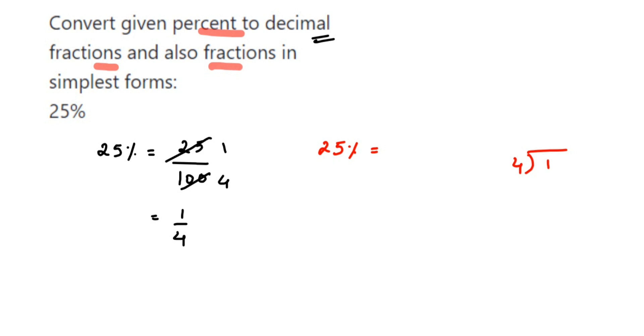That is one way of doing it, but it will take a lot of time. Instead of that, you can do this method: 25 percent means 25 upon 100. So you might have learned in your decimal chapter in your lower classes that whenever we have zeros in the denominator like 10, 100, 1000, lakh, like that, we have to just count the number of zeros and then you have to put the decimal point from the right side after that many digits.